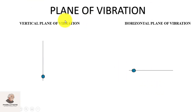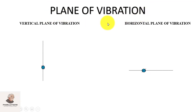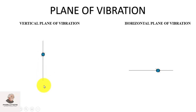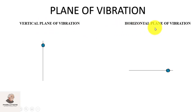Here you can see a slide on the plane of vibration. What is a plane of vibration? First of all, what is vibration? The to-and-fro motion of a body about a fixed point is called a vibration. If the body is vibrating in a vertical line, it will be named as a vertical plane of vibration. And if a body is vibrating in a horizontal plane, it will be named as a horizontal plane of vibration.